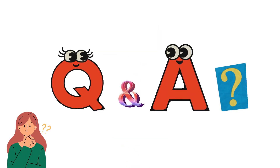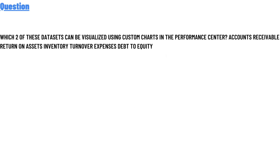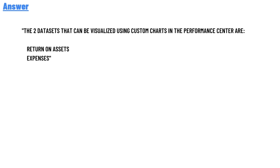Today's question is: which two of these data assists can be realized using custom charts in the performance center's account? The options are: returns on assets, variables, inventory turnover, expense, and debt to equity.